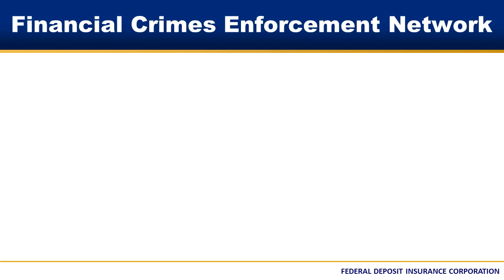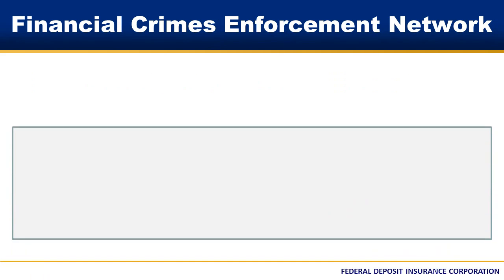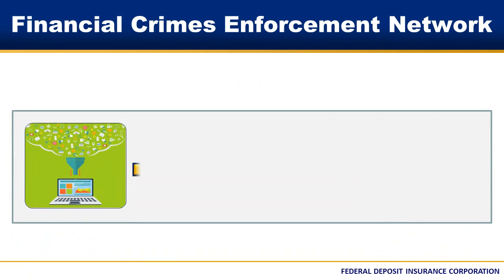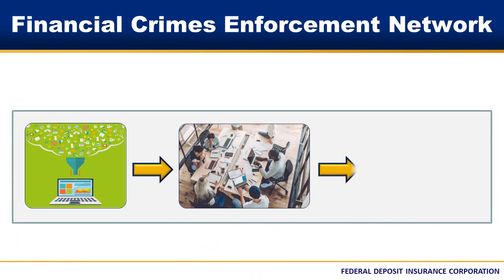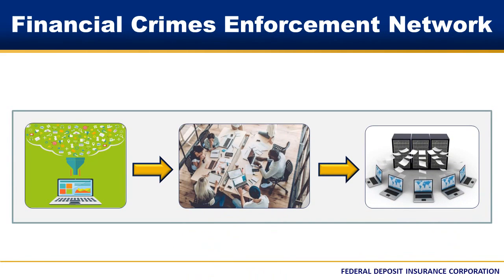The Financial Crimes Enforcement Network, referred to as FinCEN, is a bureau of the U.S. Department of the Treasury. FinCEN is designated the Administrator of the BSA. In this role, it has been authorized to implement, administer, and enforce compliance with the BSA and its associated regulations. FinCEN is also the U.S. Financial Intelligence Unit. In this role, it collects data related to money laundering and terrorist financing, analyzes it for trends and patterns, and disseminates information to law enforcement and other government agencies.